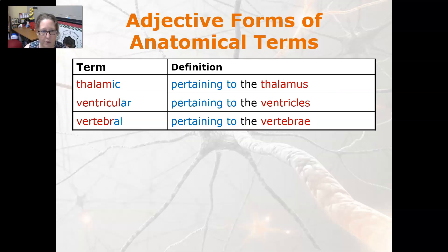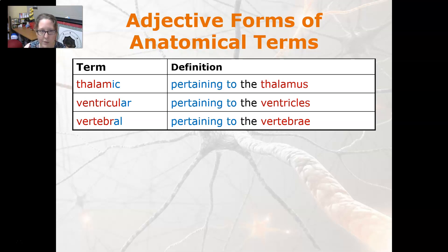Thalamic is pertaining to the thalamus, ventricular is pertaining to the ventricles, and vertebral is pertaining to the vertebrae. That wraps up our word parts for the nervous system.